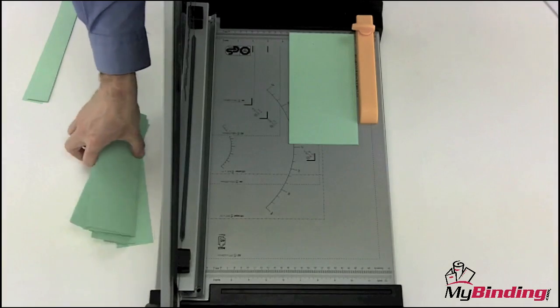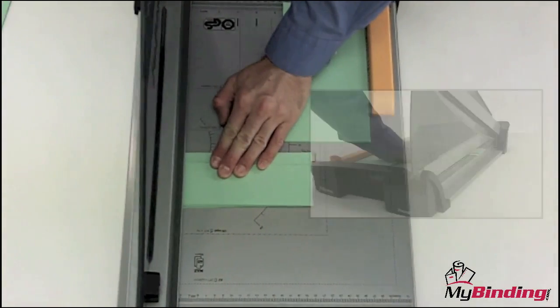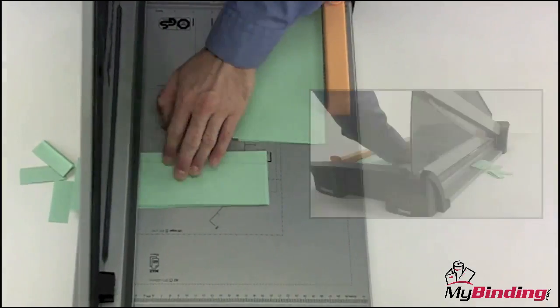Cutting capacity is obviously a selling feature for all trimmers. The Plasma 180 boasts that it can cut through 40 sheets of 20-pound paper. This was, however, a bit of an exaggerated boast.